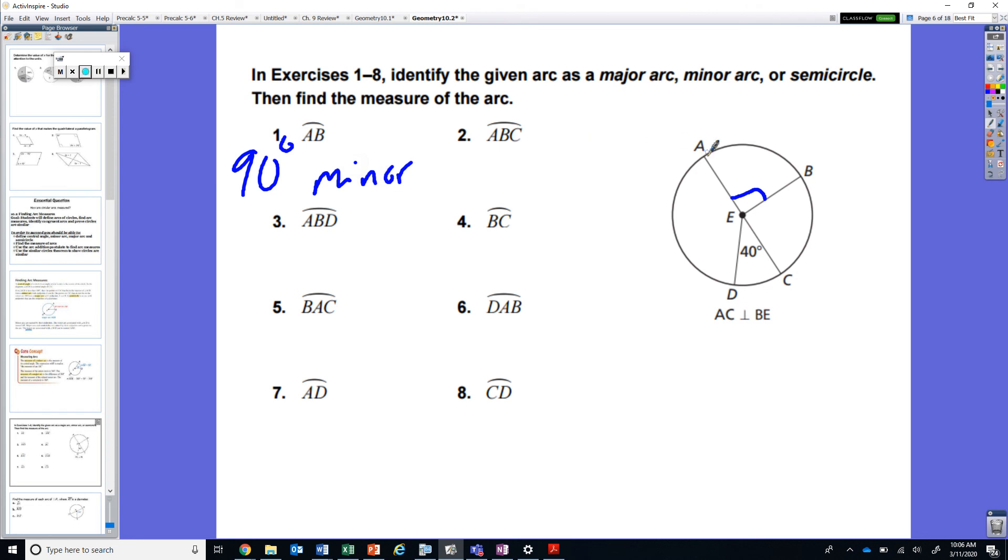What about ABC? Well this has three points so we can assume that they are referring to either a semicircle or a major arc and you can see that AC is a diameter. So that means that this whole value is half of the circle. So it is a semicircle at 180 degrees.